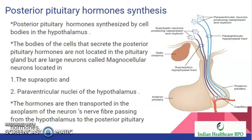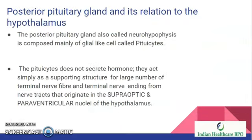The hormones are then transported into the axoplasm of the neurons, through nerve fibers passing from the hypothalamus to the posterior pituitary. The posterior pituitary gland, also called the neurohypophysis, is composed mainly of glial cells called pituicytes. The pituicytes do not secrete hormones; they act simply as a supporting structure for a large number of terminal nerve fibers.